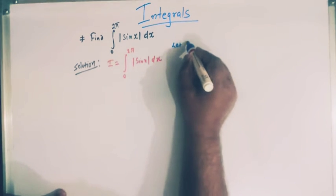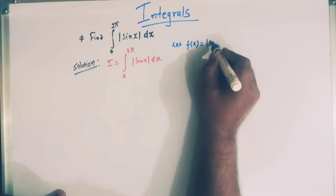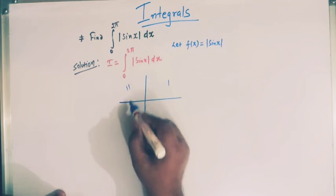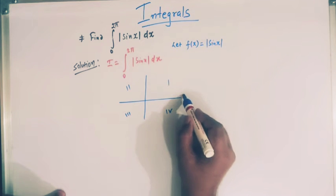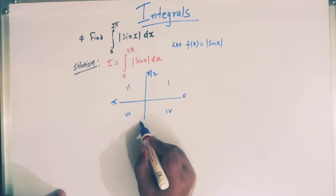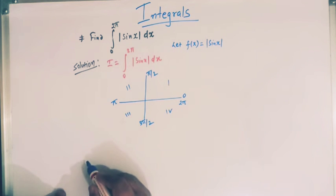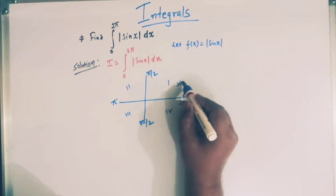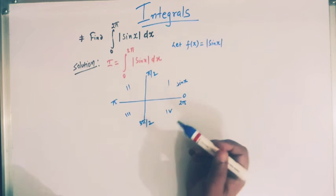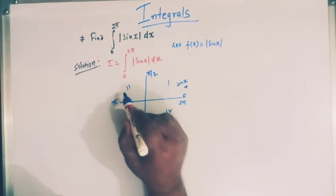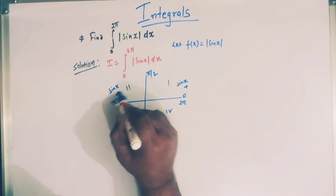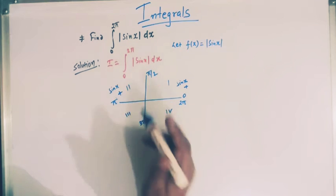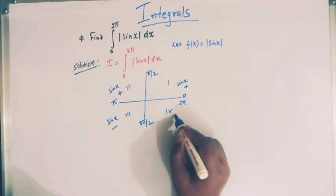Let us assume that f(x) denotes mod of sine x. Now we have the four quadrants: first, second, third, and fourth. Here we have 0, π/2, π, 3π/2, and 2π. From trigonometry we know that the sine function is positive in the first and second quadrant, and sine x is negative in the third and fourth quadrant.